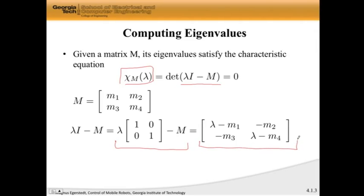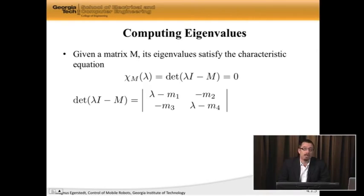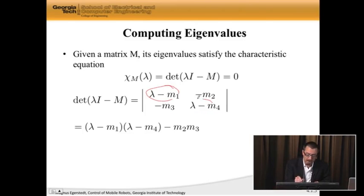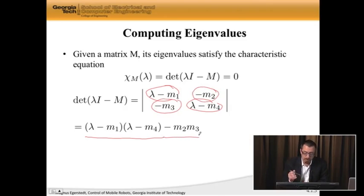Now let's take the determinant of this matrix. The determinant is this object that you get by taking this element times this element, and then you subtract away this element times that element. This is how you do it for 2 by 2 matrices. In general, it can become even more complicated. But in this case, I get this times that, which shows up as lambda minus M1 times lambda minus M4, and then I get minus M2, or minus minus M2 times minus M3, which shows up like this.